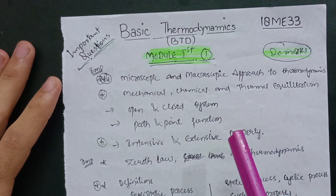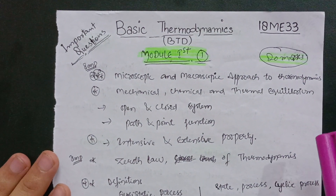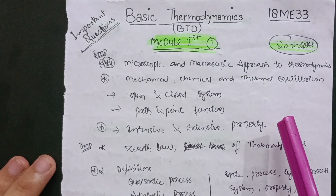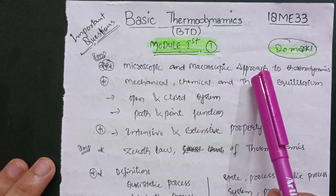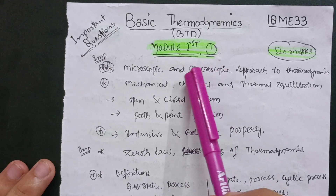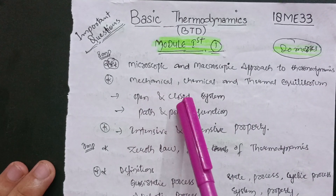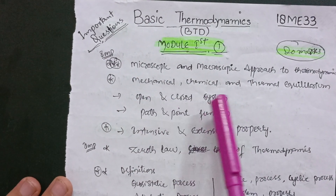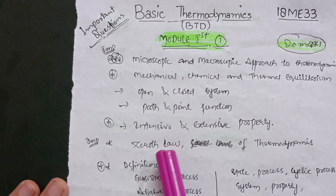We will talk about which topics you should cover so that you can easily pass this subject. In the first module, you have to cover some theory concepts to make 20 marks possible. That includes microscopic and macroscopic approach to thermodynamics, which is one of the most important questions. Other topics are mechanical, chemical, and thermal equilibrium, and also open and closed systems.